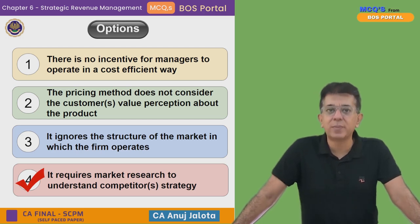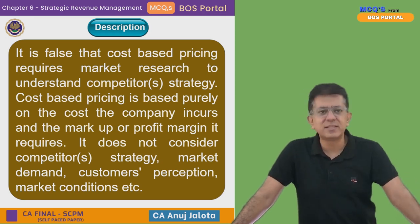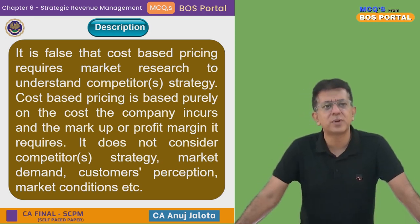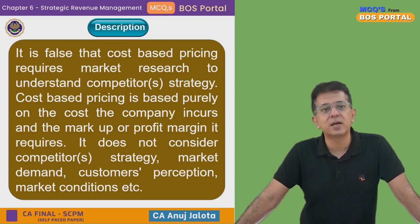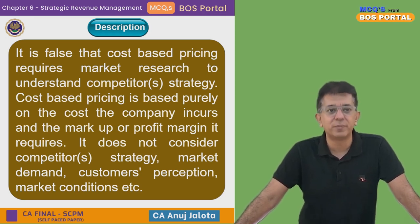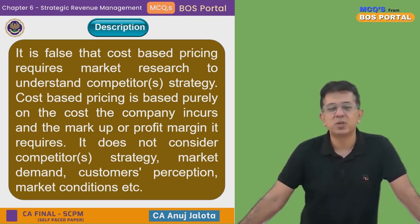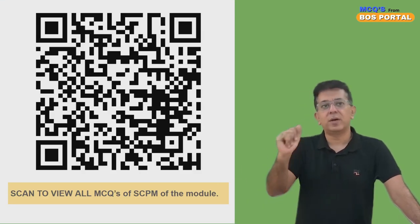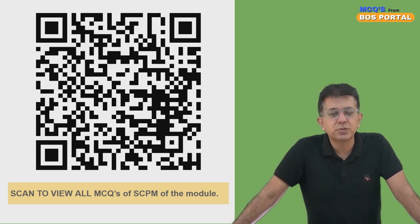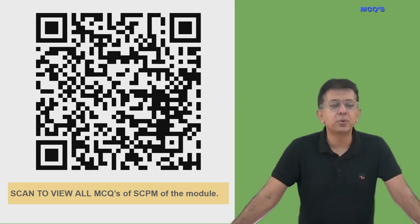Yes, Option 4 is the correct answer. As ICAI states, it is false that cost-based pricing requires market research to understand competitor strategy — it is purely based on the cost the company incurs and the markup or profit margin. It does not consider competitor strategy, market demand, customer perception, or market conditions. That's it for today. Check the QR code for the playlist of all MCQs from the SCPM module. See you next time!